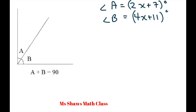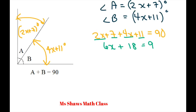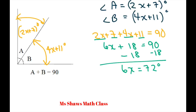The last one is the hardest. We have 2X plus 7 and 4X plus 11. Add them up: 2X plus 7 plus 4X plus 11 equals 90. That gives 6X plus 18 equals 90. Subtract 18 using the subtraction property of equality: 6X equals 72. Divide both sides by 6 using the division property: X equals 12.